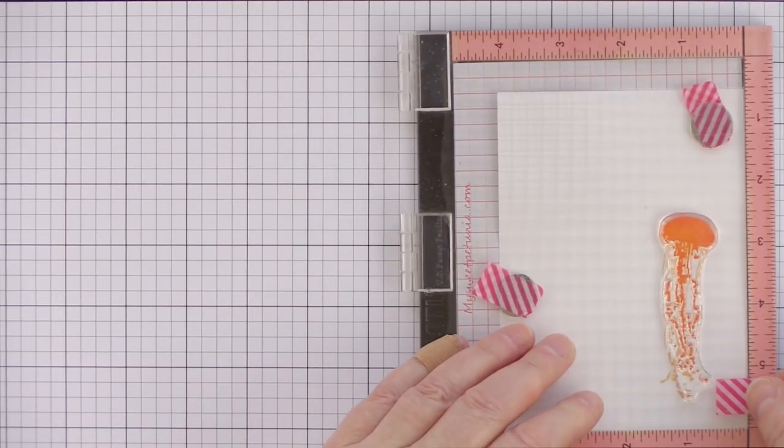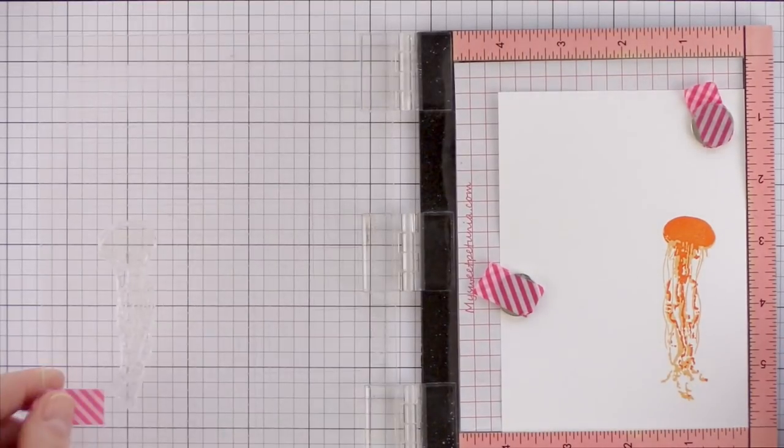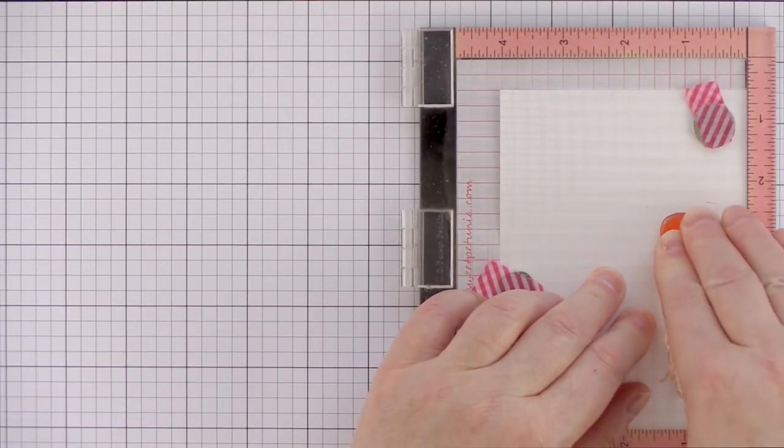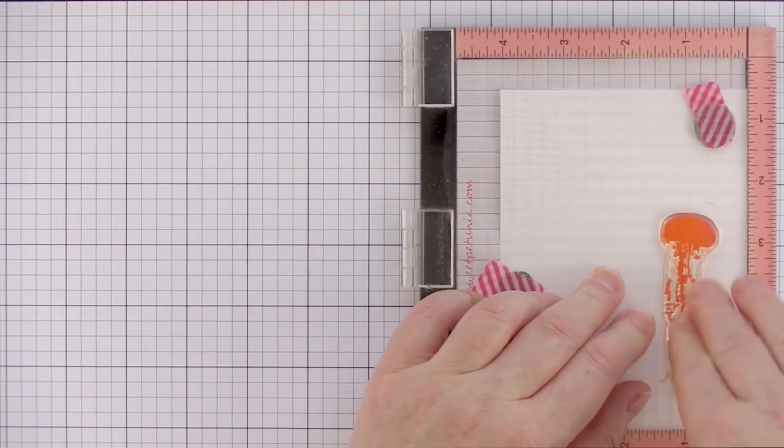Again, I'm going to stamp this orange cream layer a second time to ensure a good impression, and already out of just two layers, I'm loving the look of the jellyfish and the variation in color, particularly of the fronds.